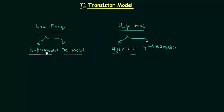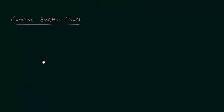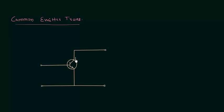We have already completed the H parameter model, and in this lecture I will explain how to obtain the RE model. We will find the RE model for a common emitter transistor. In common emitter configuration the emitter is common to both the input and output sides. We are considering an NPN transistor, but you can also take a PNP transistor — everything will remain the same, only the direction of currents will change.